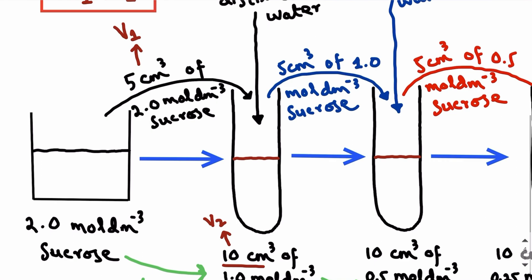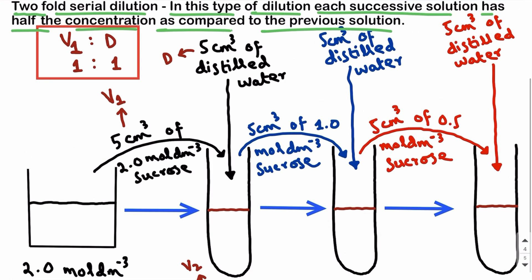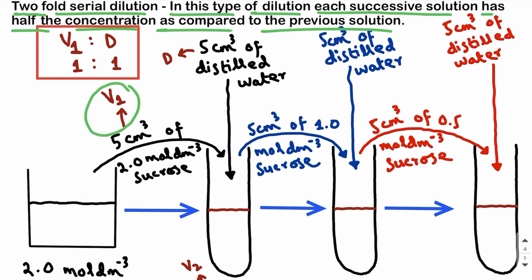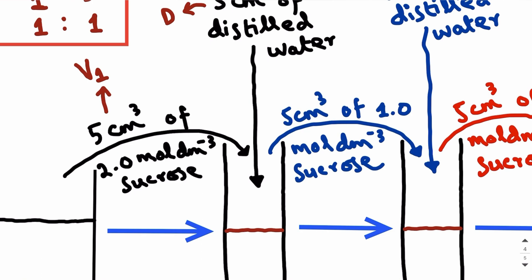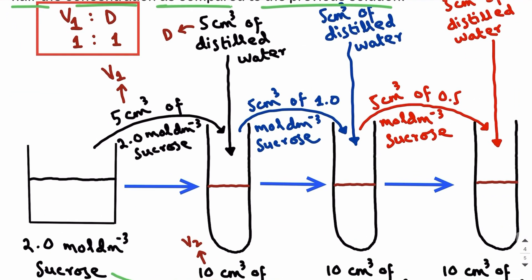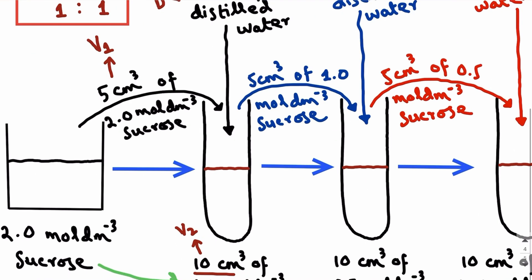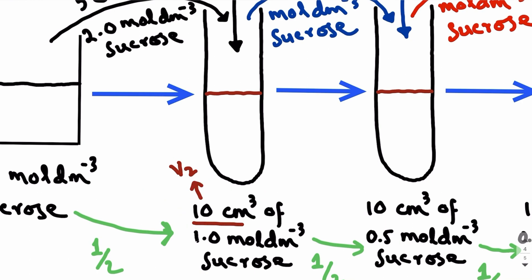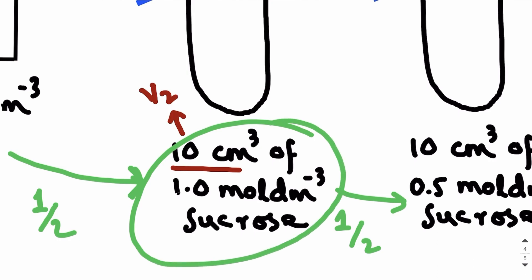For example, to prepare 1.0 mole per dm³ sucrose using 2.0 mole per dm³ sucrose, I will take 5 cm³ of 2.0 mole per dm³ sucrose in 5 cm³ of distilled water — v1 and d in equal amounts, a 1:1 ratio. If I take 2.5 cm³ of stock solution, I take 2.5 cm³ of distilled water. The volumes v1 and d add up to form v2, the volume of your desired solution.